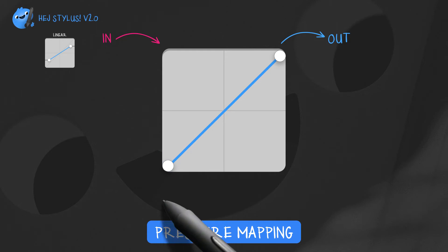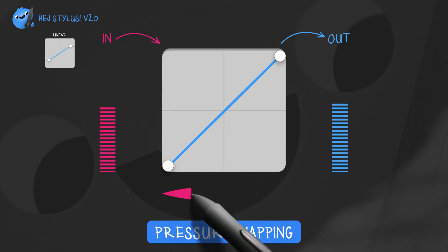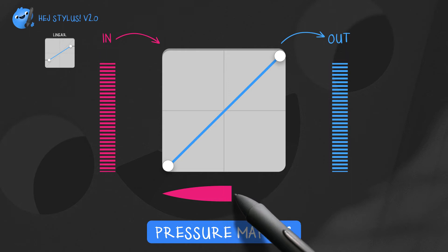When drawing a line for example, starting with zero pressure, traveling to 100%, then falling back to zero.